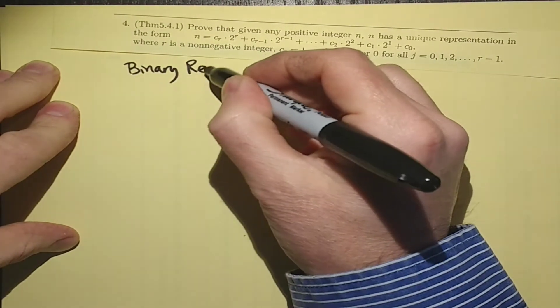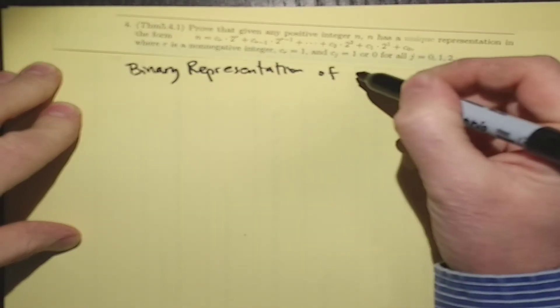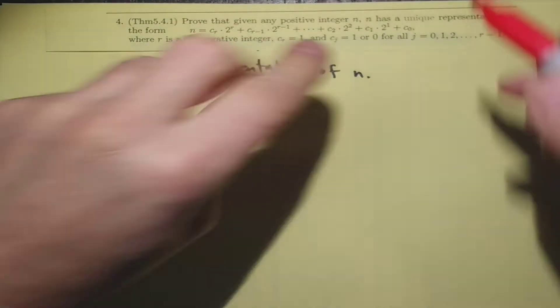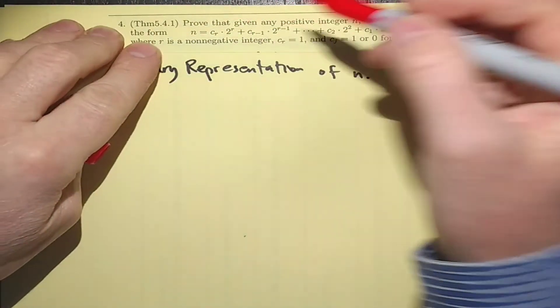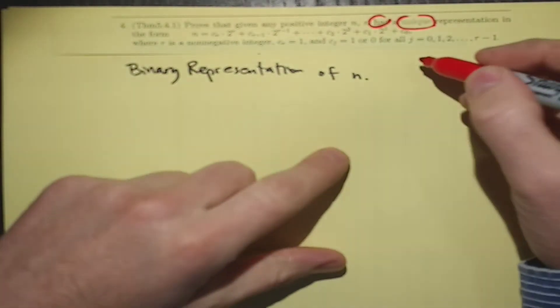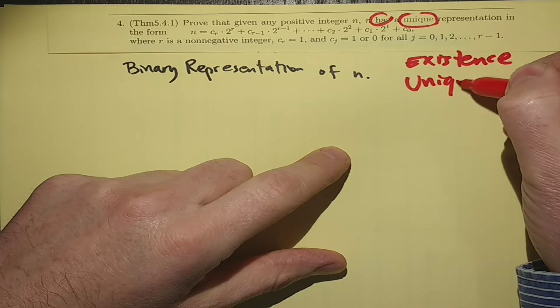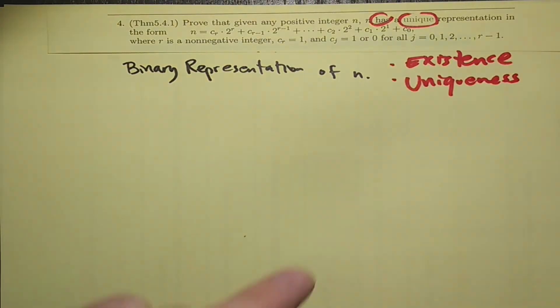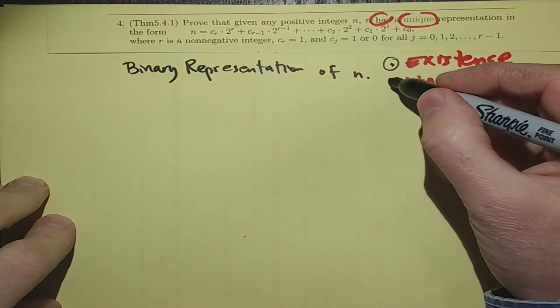Binary representation of n. And we're also saying that this is unique. So there's actually two things here: existence and uniqueness. And those are actually things that are better proven separately. Existence and uniqueness. Now let's do existence. Let's start with existence and then we'll follow up by uniqueness.